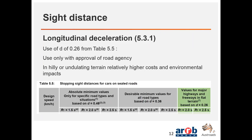There's a subtle change in Table 5.5 — stopping sight distance for cars on sealed roads. One key change is the colouring of the D value, the coefficient of deceleration. In the current guide, it now requires approval from the road agency if you want to adopt this value. That's a key change from the previous edition, because adopting that value can involve relatively higher costs or environmental impacts that road agencies want input on before proceeding with the design.